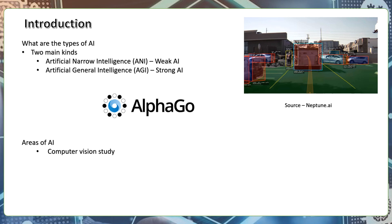From now on, we have no choice but to work with machines and make the best algorithms. This is a game where we have computers or artificial intelligence. This means we have to skill, up-skill, or re-skill.